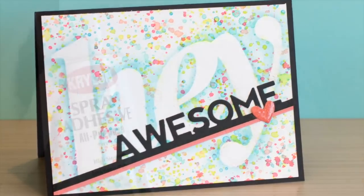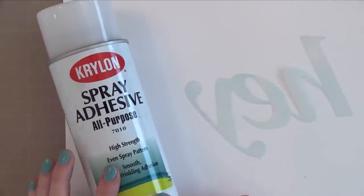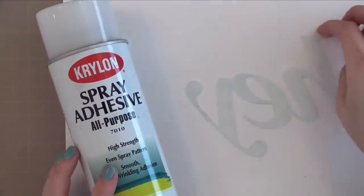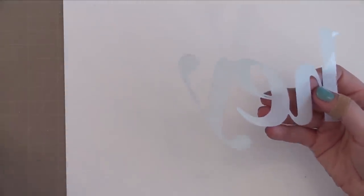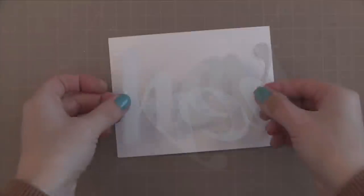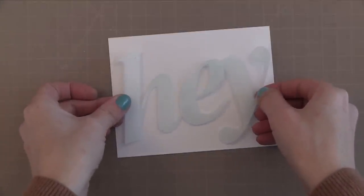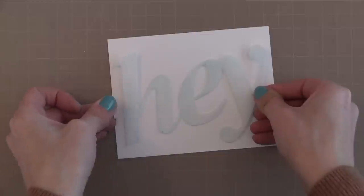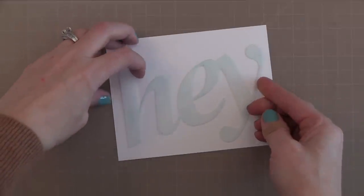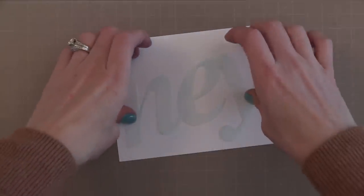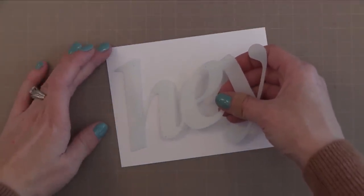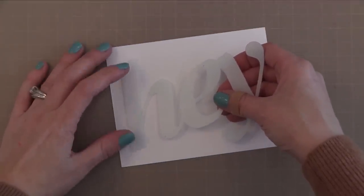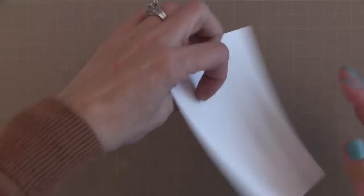I'm using a new large hay stencil from Studio Calico and I wanted to be able to stick it to my paper so it didn't move while we did the techniques. So I went outside and gave it a quick spray with some temporary spray adhesive. I'm going to take this and stick it onto a piece of 4.25 by 5.5 inch watercolor paper. I really like the Tim Holtz watercolor paper. I'm just going to stick this in place so that I mask the word hay on this paper.